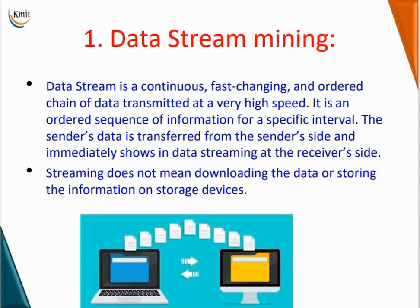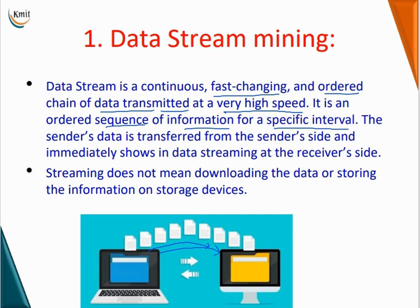Data stream is a continuous, fast-changing, and ordered chain of data transmitted at a very high speed. It is an ordered sequence of information for a specific interval. For example, from one system to another system data is flowing — sender is sending the data, receiver is receiving the data. This all happens live; there is no data storage at any point. So streaming does not mean downloading the data or storing the information on storage devices.